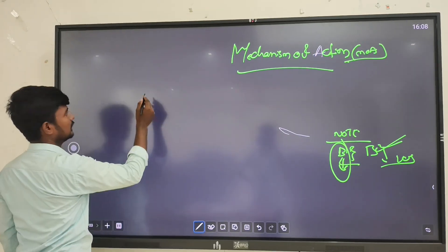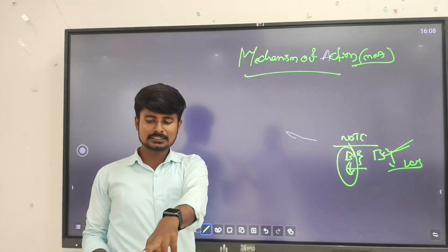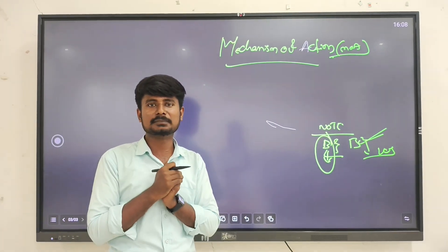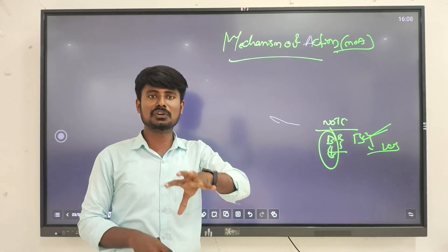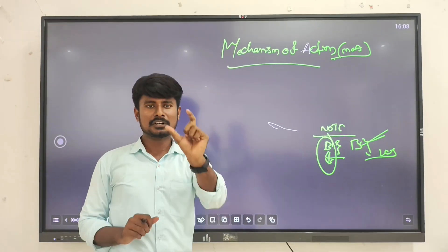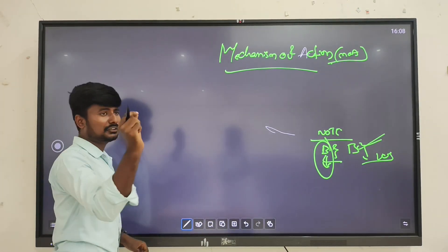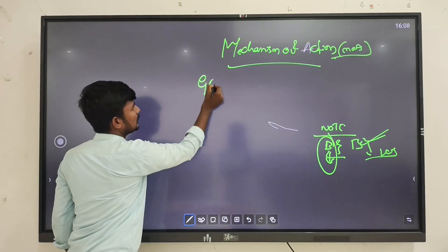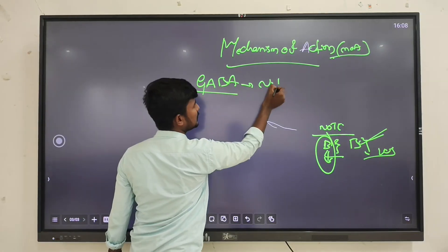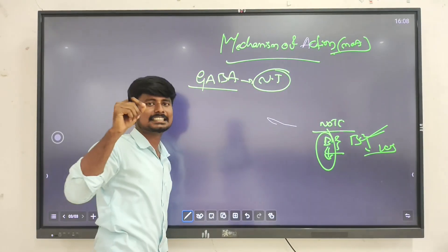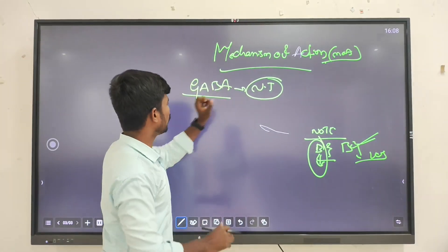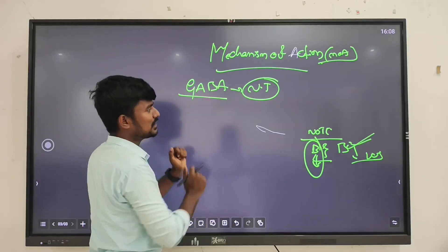Coming to the mechanism of action: when asked about the pharmacology of barbiturates, the main mechanism of action of barbiturates and benzodiazepines in our nervous system involves GABA - which is one of the neurotransmitters present in the synaptic vesicles of the synapses of the neuronal end. When the barbiturate - for example, phenobarbitone - is given...